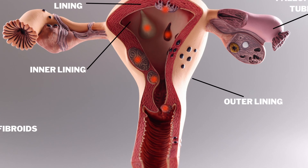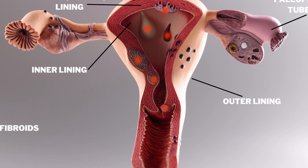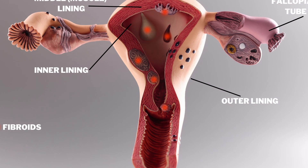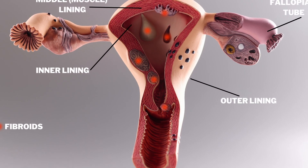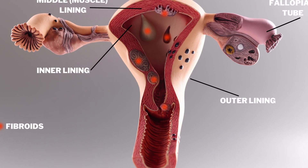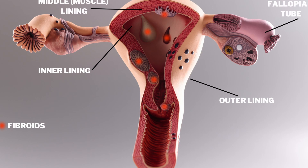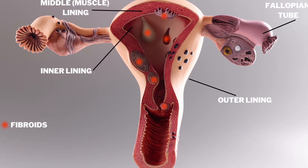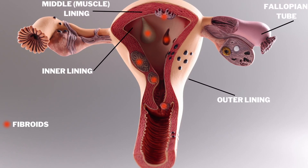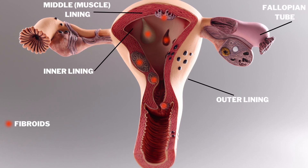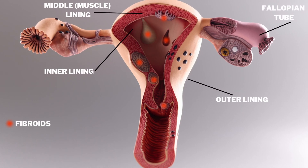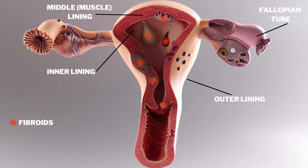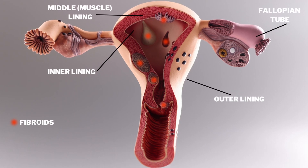Fibroids can grow from the muscle and go into the inner layer — that's the inner cavity where the baby stays. Or the fibroid can remain within the wall, or can grow into the outer layer. So a fibroid can grow outside toward the outer layer, remain within the muscle of the womb, or enter into the inner cavity of the womb. That's how fibroids are positioned in different locations.